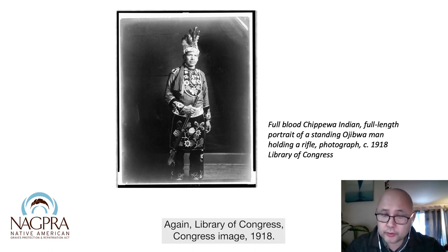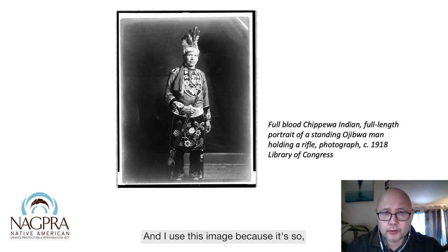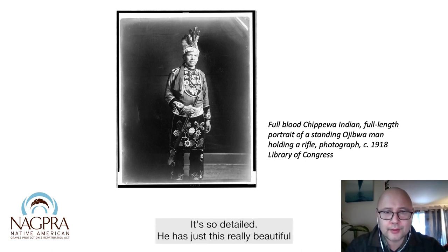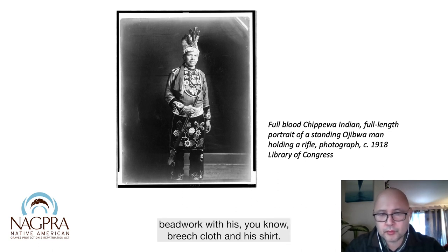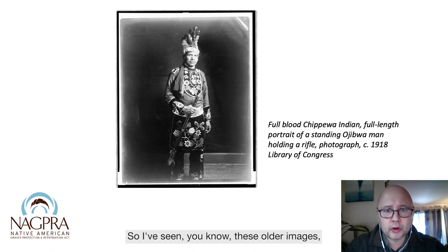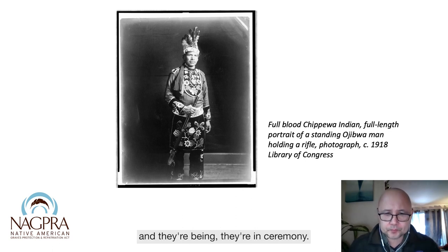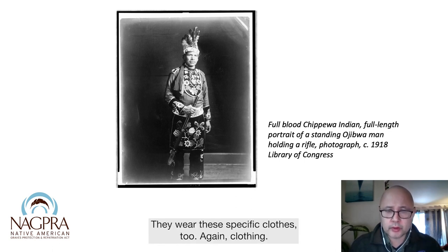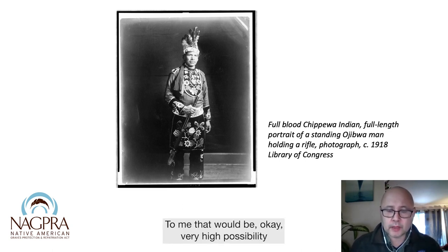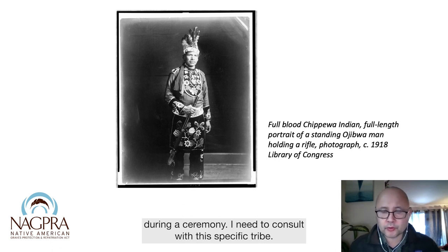This Library of Congress image from 1918 is called 'Full-Blooded Chippewa Indian' — a portrait of a standing Ojibwe man holding a rifle. His clothing is so ornate and so detailed. He has really beautiful beadwork with his breech cloth and his shirt, and he has an Ojibwe-style headdress — very different from the Western tribes. I've seen older images like this of guys dressed up in ceremony. They would wear specific clothes for ceremonies. So if you see something like this in your collection, there's a very high possibility that this was used in or during a ceremony. It needs to go on my summary list, and I need to consult with this specific tribe.